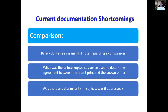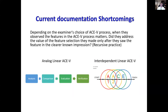Then we get to the comparison part of the friction ridge analysis report, and we seldom see anything meaningful that details the comparison. What was the uninterrupted sequence used to determine agreement between the latent print and the known print? Was there any dissimilarity? As a private defense consultant for four years, I have never seen a statement where dissimilarities that were obviously present in the latent print were addressed. This is problematic — they have to be addressed.